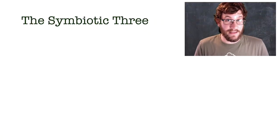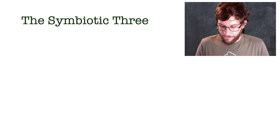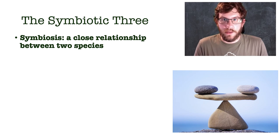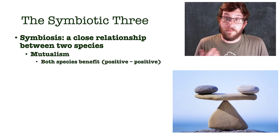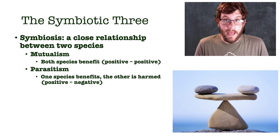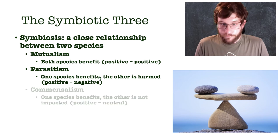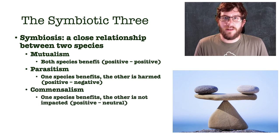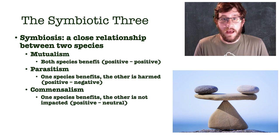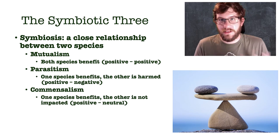Moving on to what I call the symbiotic three — these are symbiotic relationships, meaning two species interacting in balance where usually one or both cannot live without the other. Mutualism is a positive-positive relationship where both species benefit. Parasitism is a positive-negative relationship where one species benefits and the other is harmed, either fatally or not. And finally commensalism is a positive-neutral relationship where one species benefits and the other simply doesn't care.